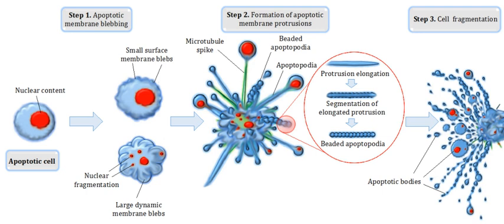Bleb growth is driven by intracellular pressure generated in the cytoplasm when the actin cortex undergoes actomyosin contractions. The disruption of the membrane-actin cortex interactions are dependent on the activity of myosin. Bleb formation can be initiated in two ways: one, through local rupture of the cortex, or two, through local detachment of the cortex from the plasma membrane.